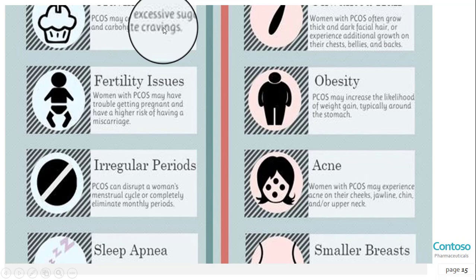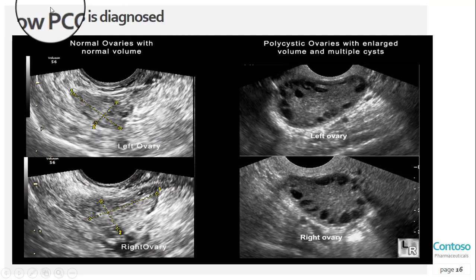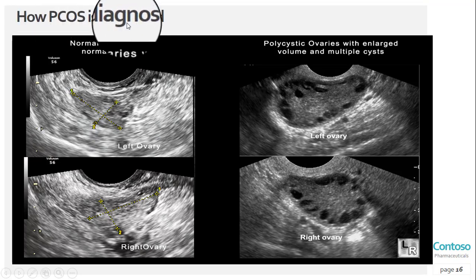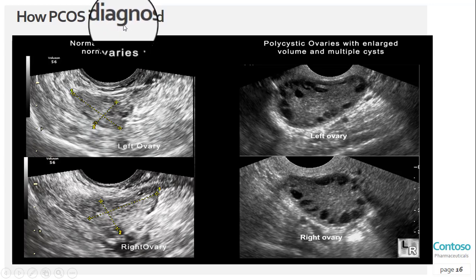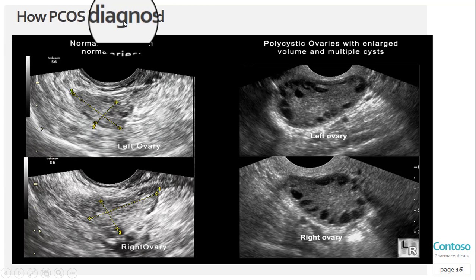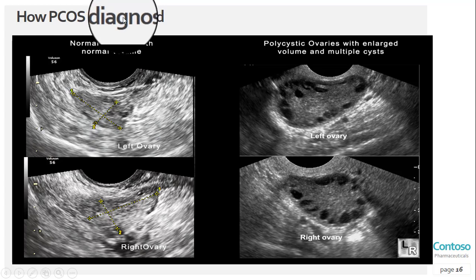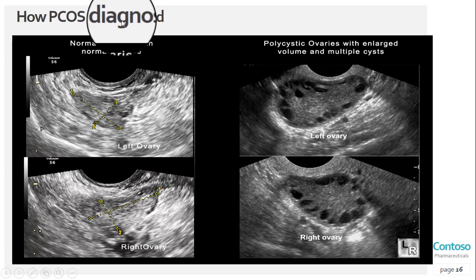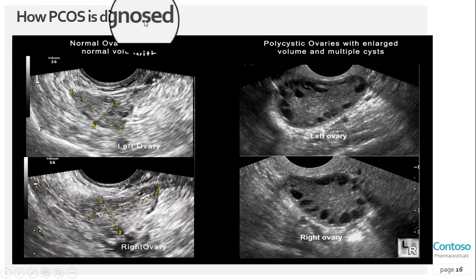Now let's discuss the investigations — how you can diagnose PCOD. A doctor typically diagnoses PCOS in women who have at least two of these three symptoms: high androgen levels, irregular menstrual cycles, or cysts in the ovaries. The doctor will also check for symptoms like acne, face and body hair growth, and weight gain. The first test is a physical pelvic examination, where the doctor inserts gloved fingers into the vagina to check for any growths in the ovaries or uterus.